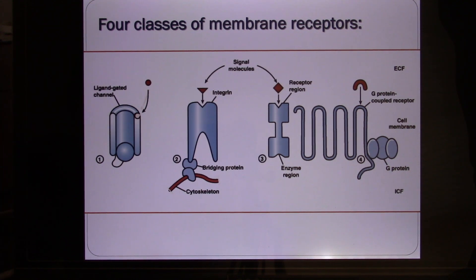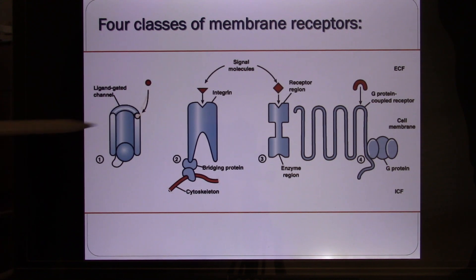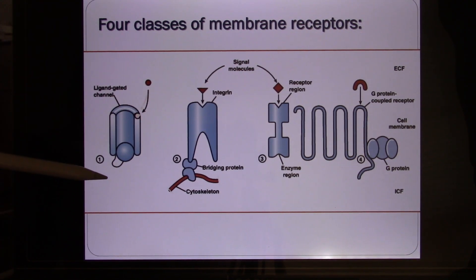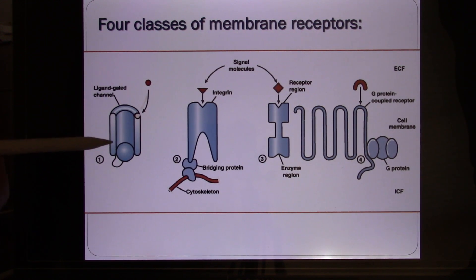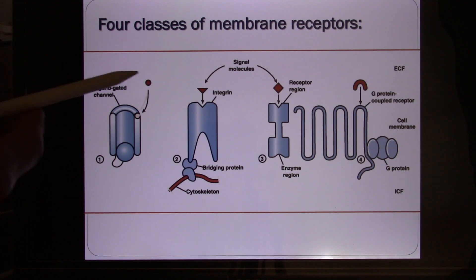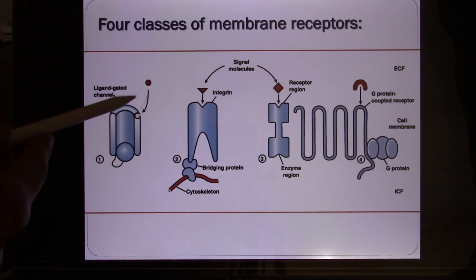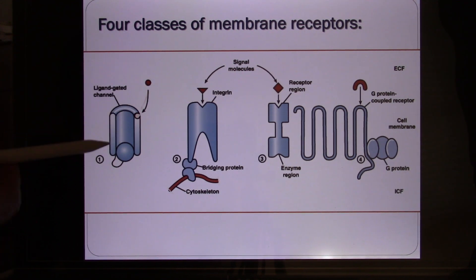The first one is called the ligand-gated ion channel. Ion channels function to make ions go through the cell membrane. Most ion channels are usually closed. When the ligand — this chemical molecule — binds with it, it will open the ion channel.